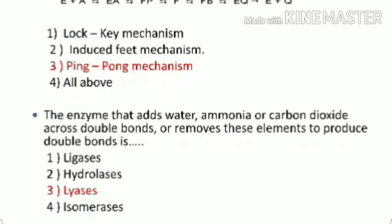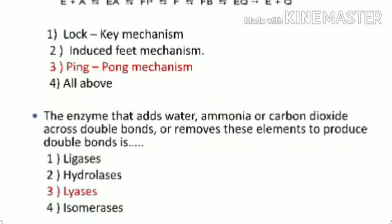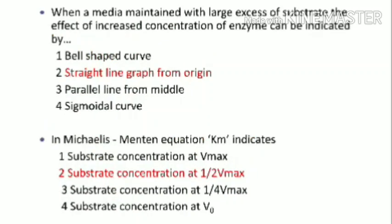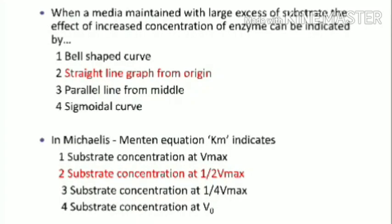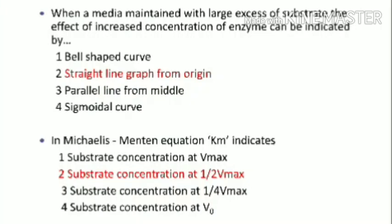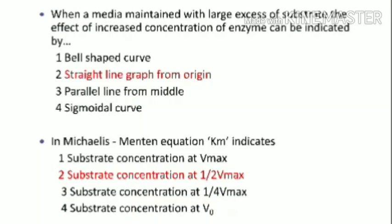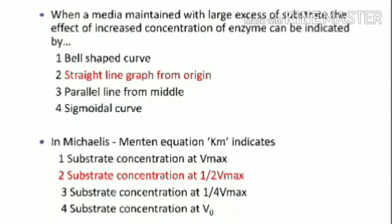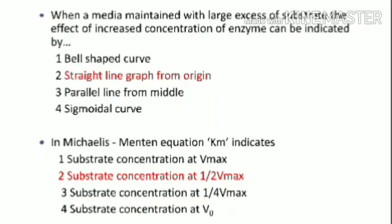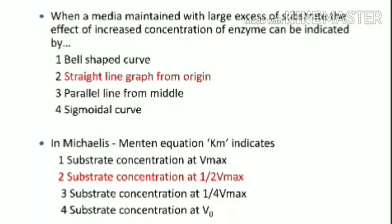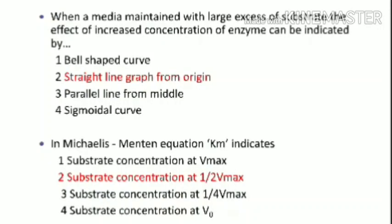The enzyme that adds water, ammonia, or carbon dioxide across a double bond, or removes these elements to produce a double bond, is a Lyase. When a medium is maintained with a large excess of substrate, the effect of increased concentration of enzyme is indicated by a straight line graph from the origin, because with excess substrate and increasing enzyme concentration, the reaction continuously increases. So the second option is correct.